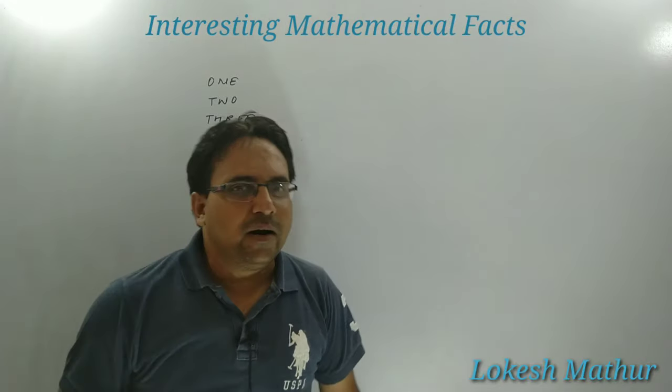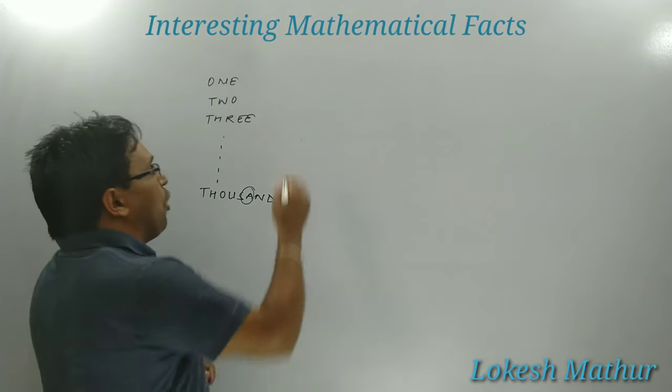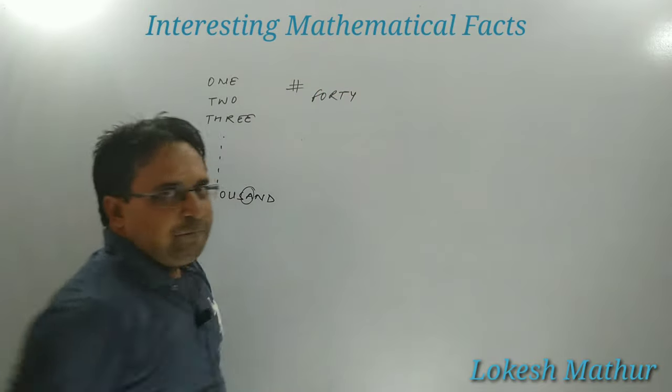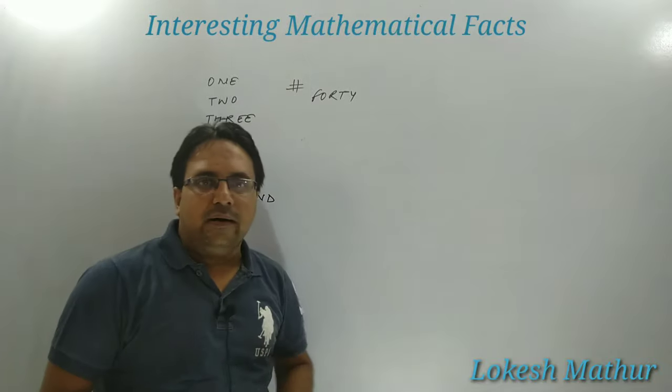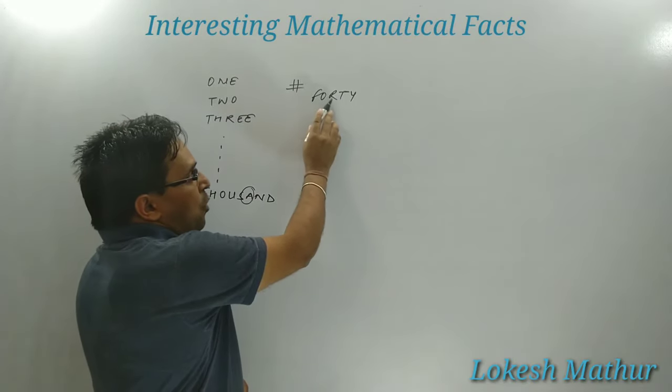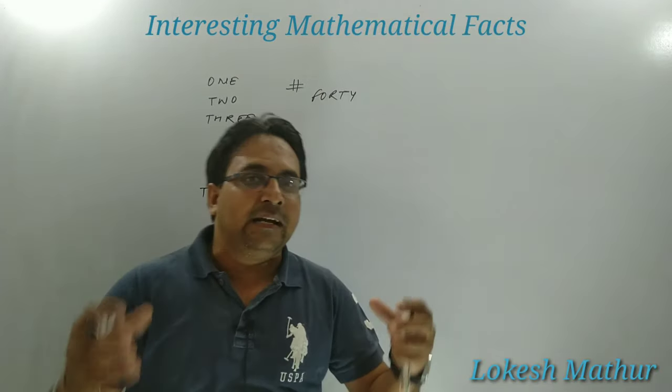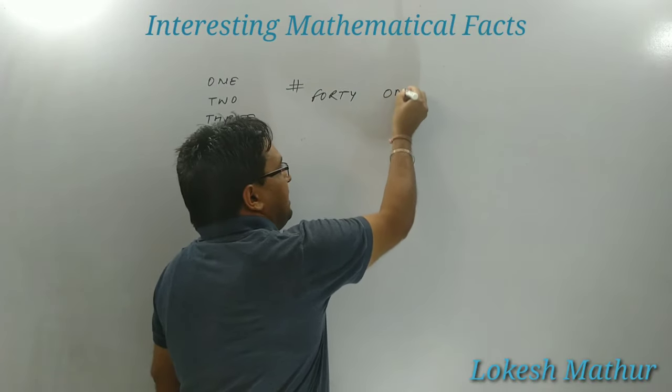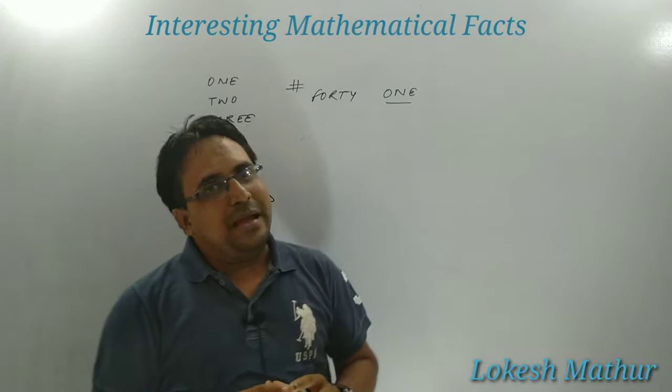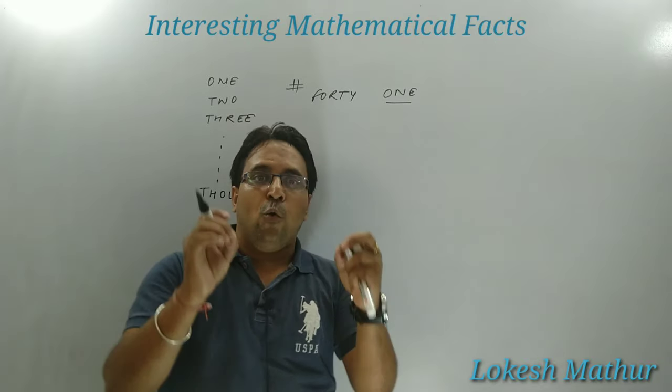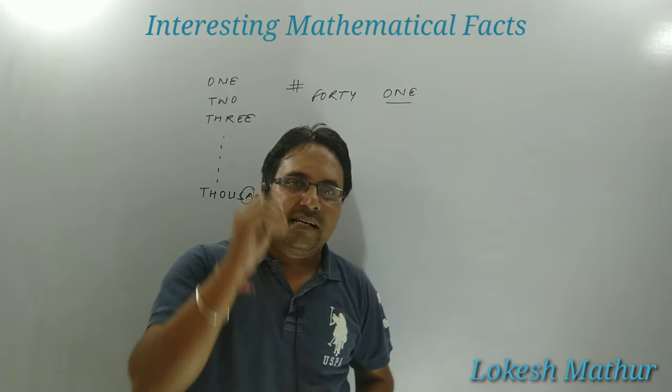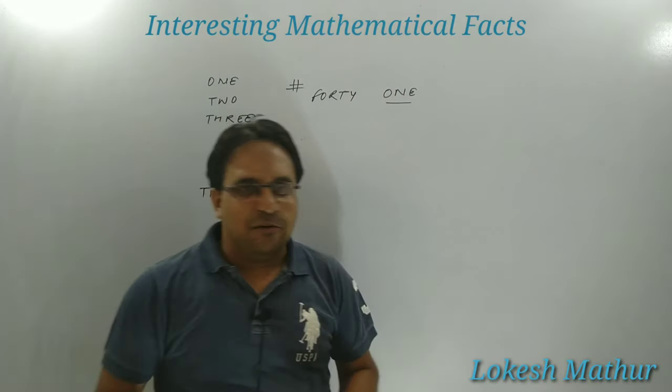Forty is the only word in the entire number system which is written in alphabetical ascending order. If you check: F-O-R-T-Y, all the letters are in ascending order according to the alphabet. Whereas the only word which is in reverse order, or we can say descending order, is O-N-E: one. Forty is the only number when written in English alphabet format that gives you an ascending order of alphabets, whereas one is the only word written in descending format: O-N-E. Highly amazing! Once again I'm sure you must be delighted to see these facts.